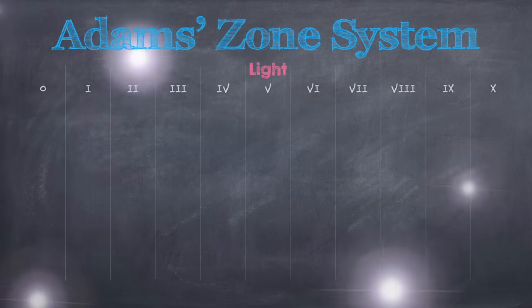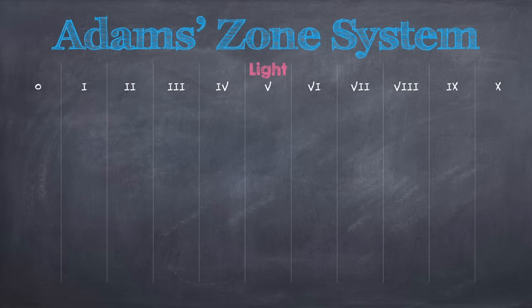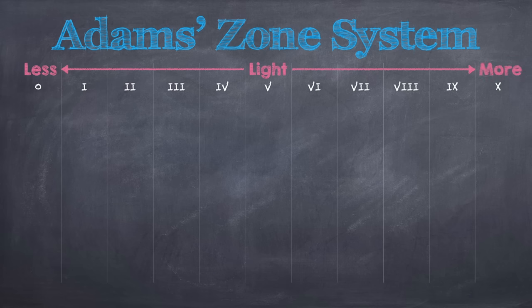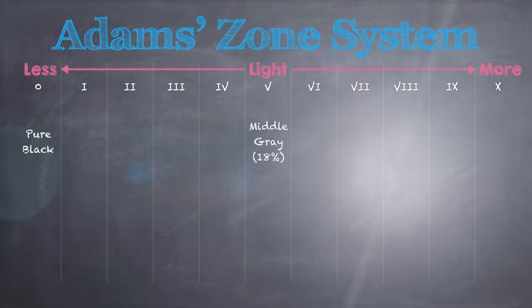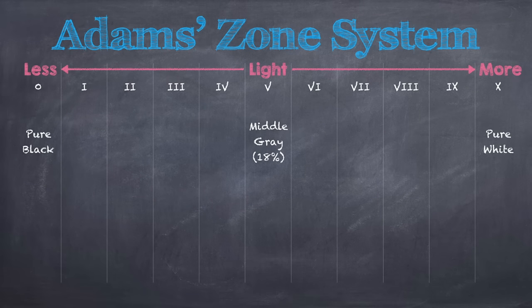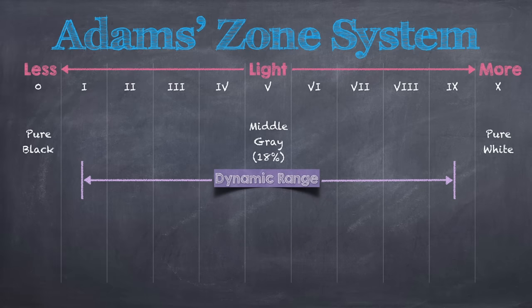Ansel Adams designed what he called the zone system, which basically divides the quantity of light into 10 stops or zones of light. As we move towards zone 0, less light is captured, and as we move towards zone 10, more light is captured. This translates into zone 0 being pure black with no detail visible, and zone 10 being pure white with no detail visible. Zone 5 is considered middle gray and is what all handheld and built-in light meters are calibrated for. If you had your camera set to automatic exposure control, the meter will measure all the light in the scene and average the exposure to read 18% middle gray or zone 5. This represents an exposure that ideally gives you the full dynamic range of zones 1 through 9 with detail across this spectrum of light.